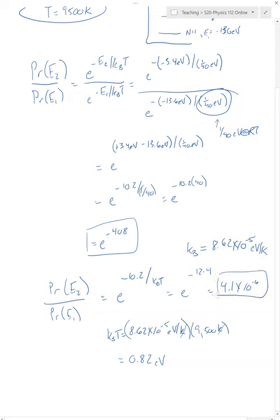And if I take E to the minus 12.4, I get that this is 4.1 times 10 to the minus 6. So it's still much more likely, it's a million times more likely to be in the first energy state than the second energy state. But we still have one out of every million or four out of every million or so that are going to be in that higher energy state.